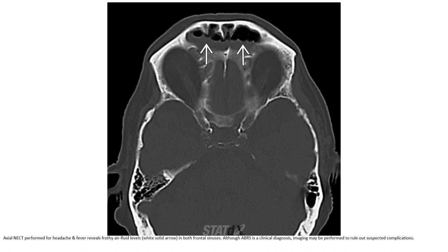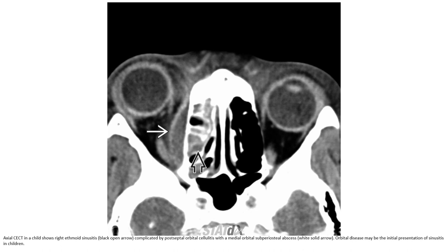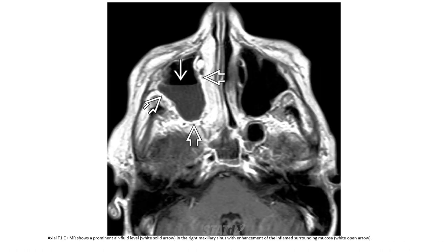Non-contrast CT performed for facial pain and fever reveals bilateral air-fluid levels in both frontal sinuses. Although acute bacterial rhinosinusitis is a clinical diagnosis, imaging may be performed to rule out another suspected complication. Contrast CT in a child with ethmoid sinusitis complicated by bilateral subperiosteal orbital cellulitis with a medial superior orbital subperiosteal abscess. Orbital disease may be the initial presentation of sinusitis in children. Note the prominent air-fluid level in the right maxillary sinus with enhancement of the inflamed surrounding mucosa.